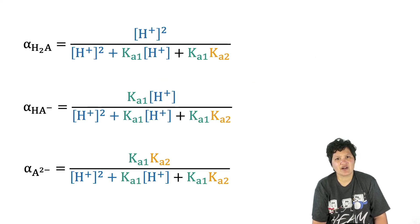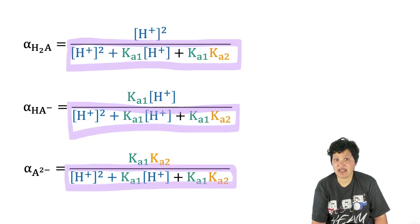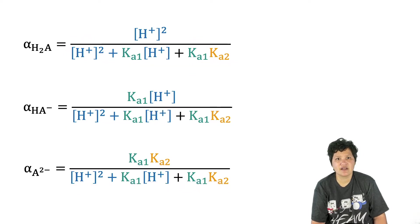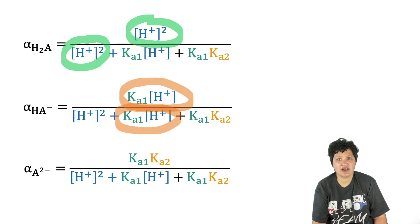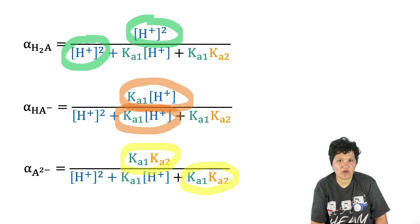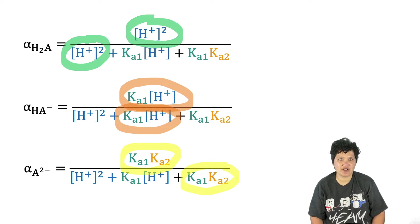So now we have the fractional composition expressions for each of the three species in a diprotic acid solution. As you look at them, you'll notice a couple of things. First of all, the denominators are the same. Please remember that the denominator represents the total amount of acid, so this is a good thing. Secondly, if you look at the numerators of each fraction, you see that they each correspond to a term in the denominator. H plus squared represents the H2A fraction, Ka1 times H plus represents the HA minus fraction, and Ka1 times Ka2 represents the A2 minus fraction. So the total of these fractions would be H plus squared plus Ka1 times H plus plus Ka1 times Ka2, and that represents the total amount of acid available, which is the denominator of our fraction.